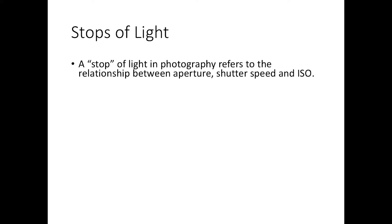What this video is mainly about is understanding what we call a stop of light in photography. A stop of light is basically the relationship between changing your aperture, shutter speed, or ISO, because the numbers don't correlate with each other perfectly. We use this term — a stop of light — to refer to what the equivalent change is when comparing aperture, shutter speed, and ISO.